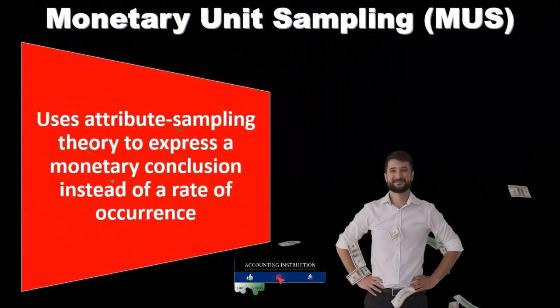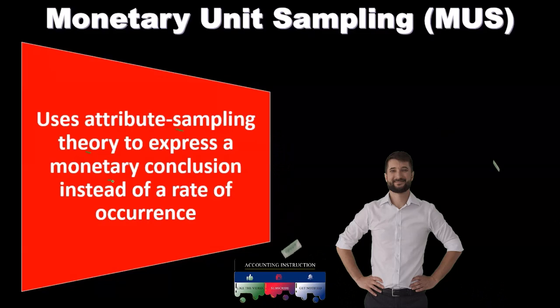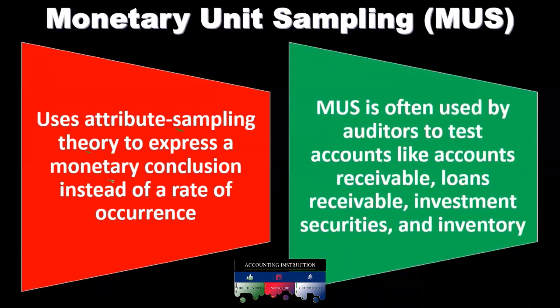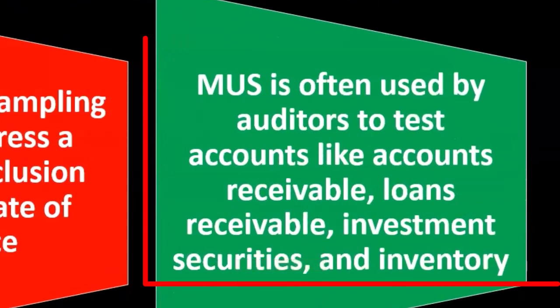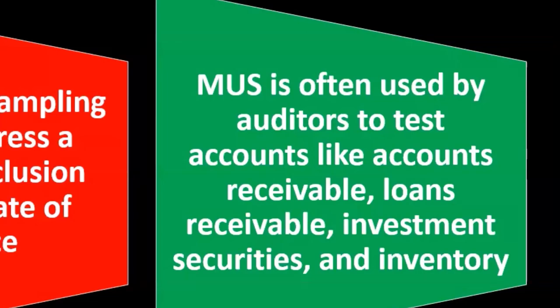When we consider this, we would think about what types of tests we would want to yield a monetary conclusion as opposed to a rate of occurrence. Monetary unit sampling is often used by auditors to test accounts like accounts receivable, loans receivable, investment securities, and inventory.